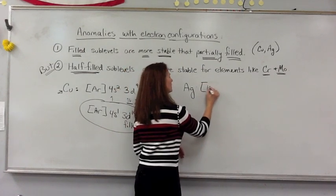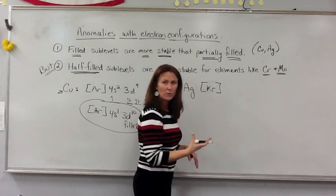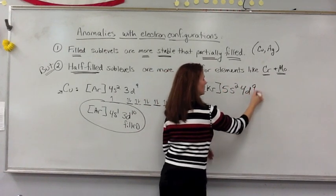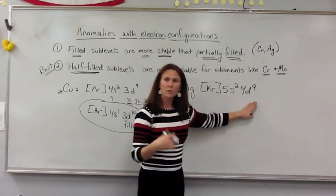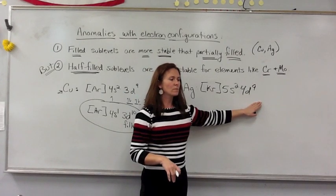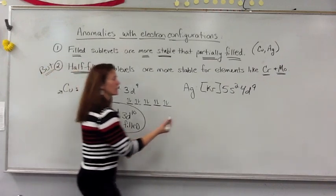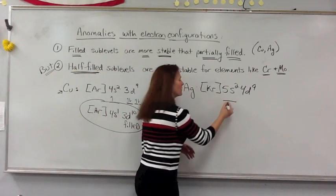Krypton in brackets, 5s2 and 4d9. If you take a look at the similarities between silver and copper, you'll notice there are paired electrons in the 5s.